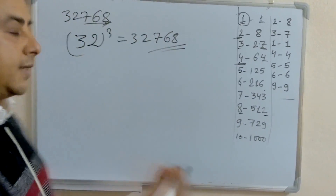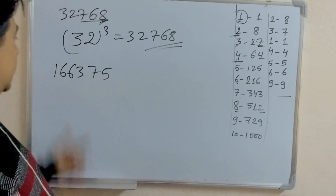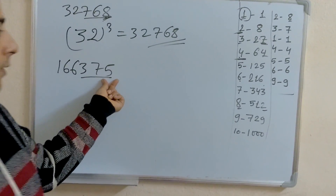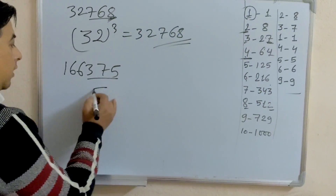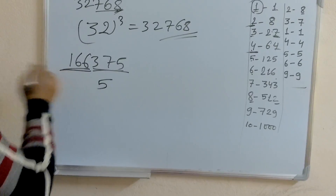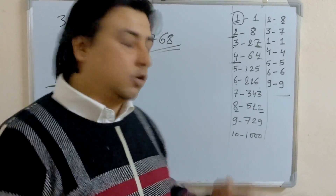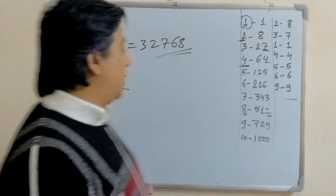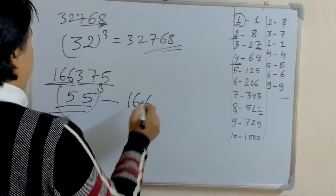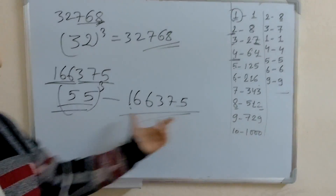It's very easy! Let's take the next example: 166375. Take the last 3 digits — 375. The last digit is 5, which corresponds to 5 cube, so write 5. Ignore these 3 digits. The remaining number is 166, which lies between 125 and 216, so take the smallest one — that is 5 cube. Write 5. Therefore, 55 cubed equals 166375, and the cube root of 166375 is 55.